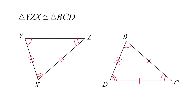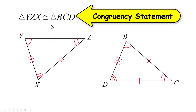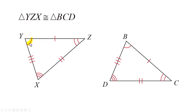What you're looking at are two congruent triangles marked up the way you'll need to learn, and you have a congruency statement you need to learn how that works too. This angle Y has one little angle mark on it and it is congruent to angle B — in the congruency statement, Y is first and B has to be first.